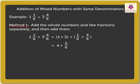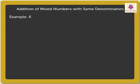Thus, the resulting mixed number is 4 and 5/6. Now, quickly solve the next example, but this time using the second method.